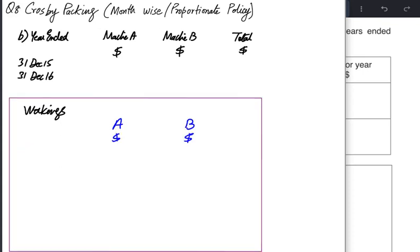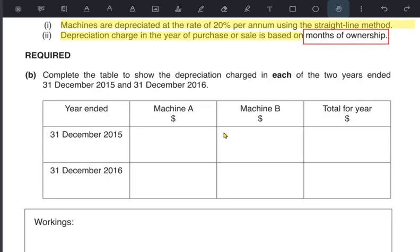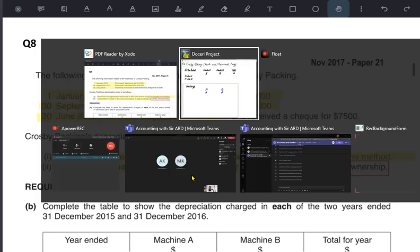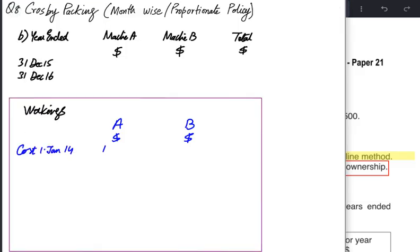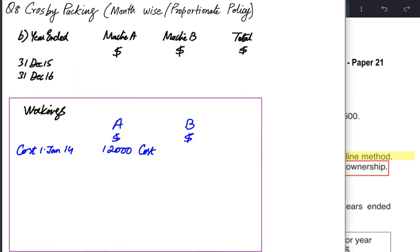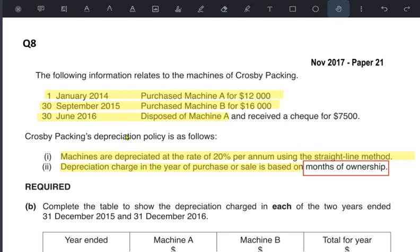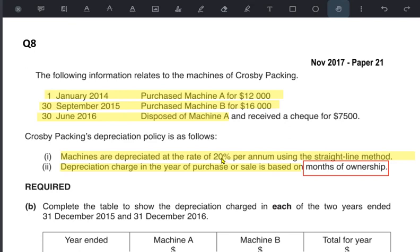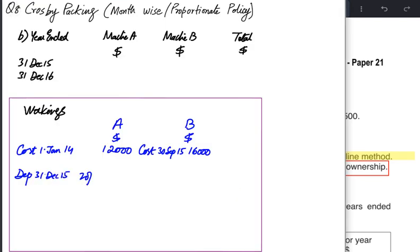We have two machines — A and B. Machine A was bought for 12,000 on 1st January 2014. We need to calculate depreciation not for 2014 but for 2015 and 2016. In 2015 we had Machine A from the previous year, and we also bought Machine B at the end of September for 16,000. The depreciation rate is 20%.